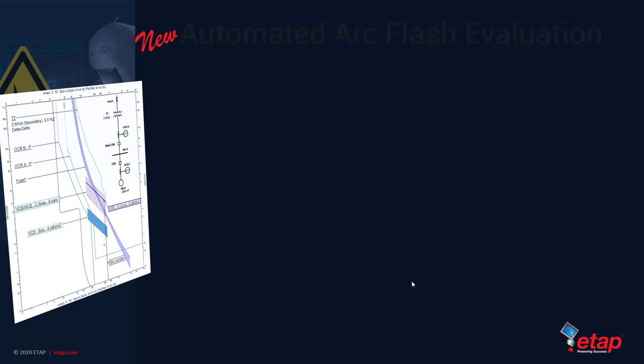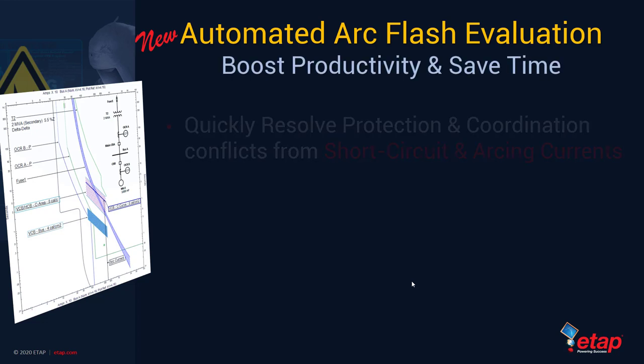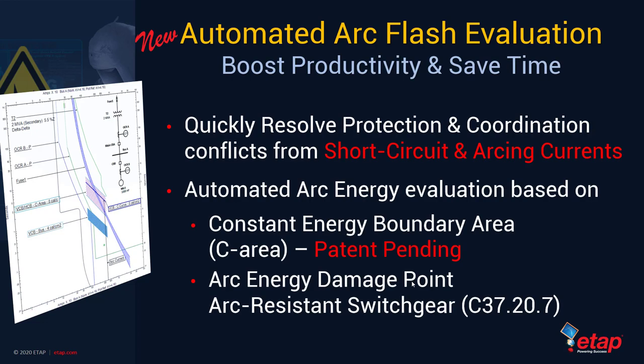Now that we've looked at a summary of all the major features and capabilities in ETAP20, let's take some of these major capabilities and go into a little more detail along with the ETAP software. First up is automated Arc Flash evaluation that allows you to boost productivity and save time. The maximum amount of time spent during any power system study is usually during the protection and coordination phases as well as the Arc Flash studies.